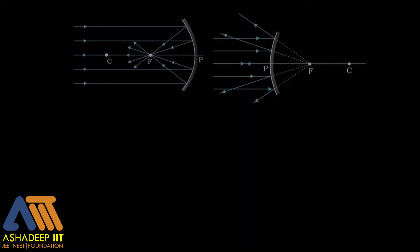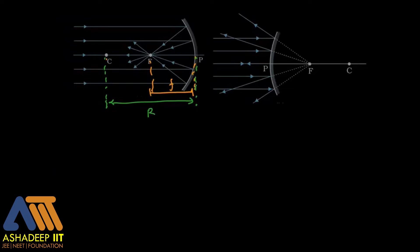From the last session, we have the diagram showing the focal length from P to F, and the radius of curvature. For a concave mirror, both focal length and radius of curvature will be negative, because the incident ray goes in the positive direction and these distances are measured opposite to that.